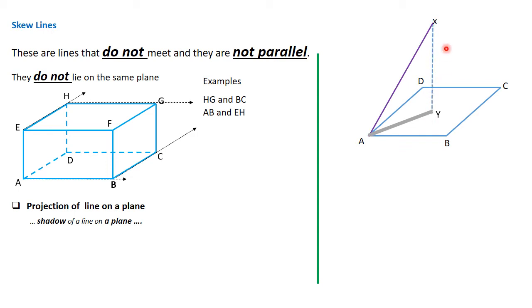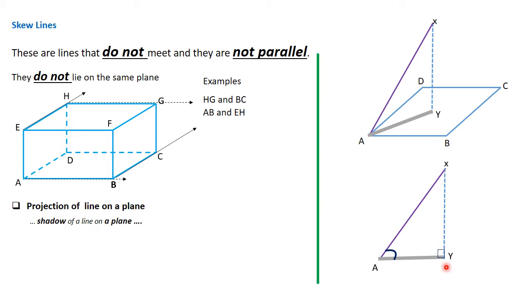Since X falls on Y, this light is perpendicular to AY. Therefore, what we have is a right angle triangle, where AX is the hypotenuse and AY and XY are the perpendicular sides. That defines what projection of a line on a plane is — it is the shadow of the line on the plane, which normally forms a right angle triangle.